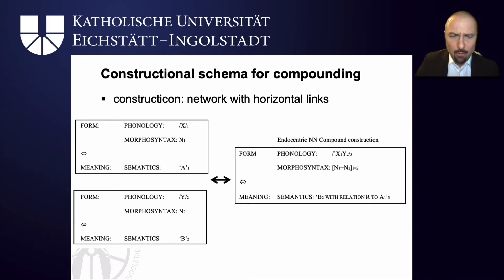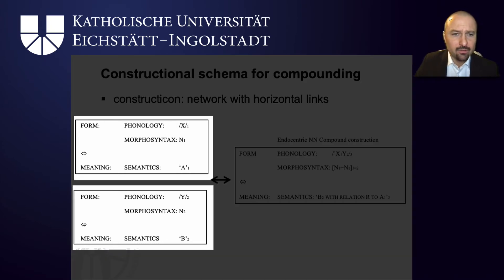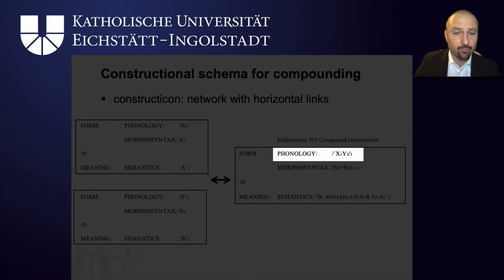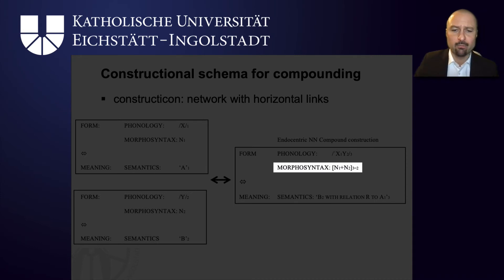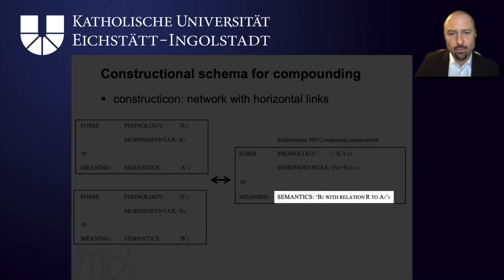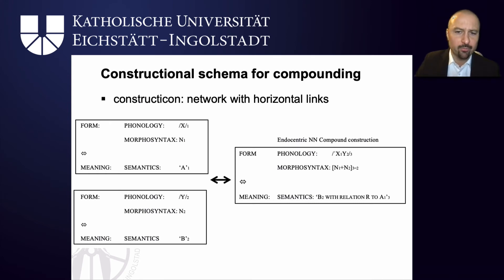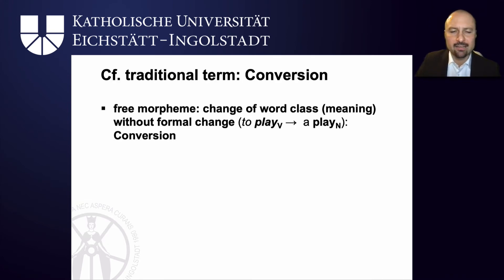Abbreviating this, we can say that N1 has a relation R with N2, and for a specific compound it is the frame-based encyclopedic knowledge that tells us which relation that is. Using constructional schemas and network representation, we therefore have two nouns linked to an endocentric noun-noun compound construction. On the phonology level this compound construction has initial stress on the first element; morphosyntactically it combines two nouns and itself is a noun; and semantically, since these are endocentric compounds, the second element is the more important one — daylight is a kind of light — and this second element has a relation to the first, so a steamboat is a boat driven by steam.